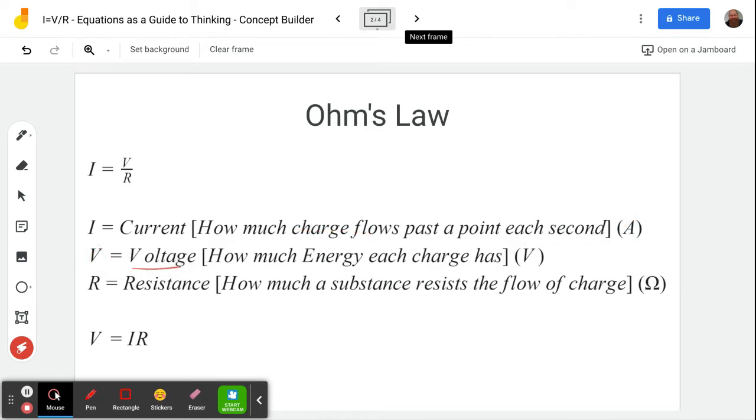V is voltage, how much energy each charge has. Volts, which is joules per coulomb. And resistance R, which is how much a substance resists the flow of charge, measured in Ohms.